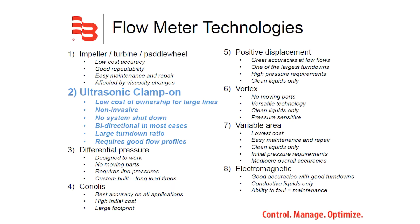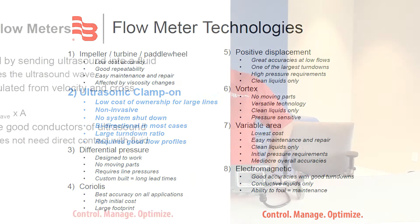Flow meters come in many shapes and sizes with key advantages and disadvantages for each type of technology. For ultrasonic clamp-on flow meters, some of the key advantages are low cost of ownership for large lines, they can be installed without shutting down the system, they can be bi-directional, and have very large turndown ratios.